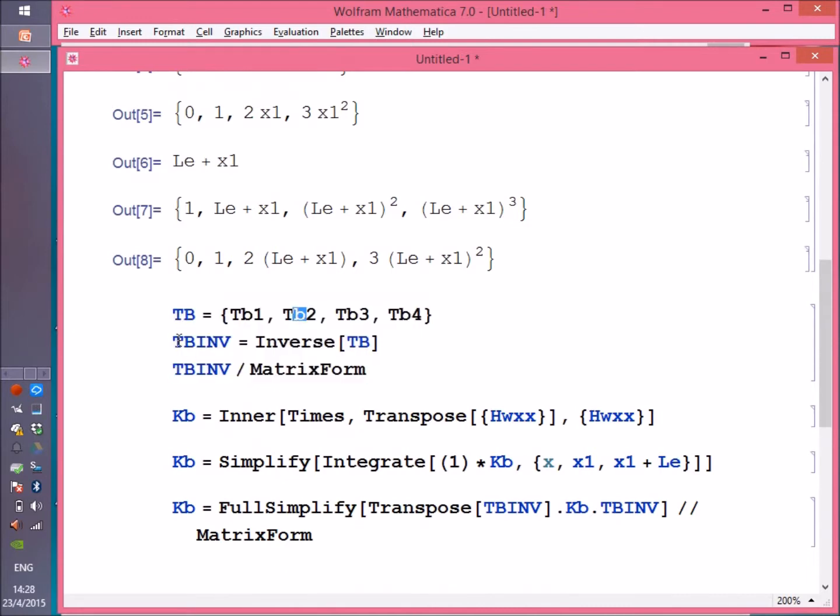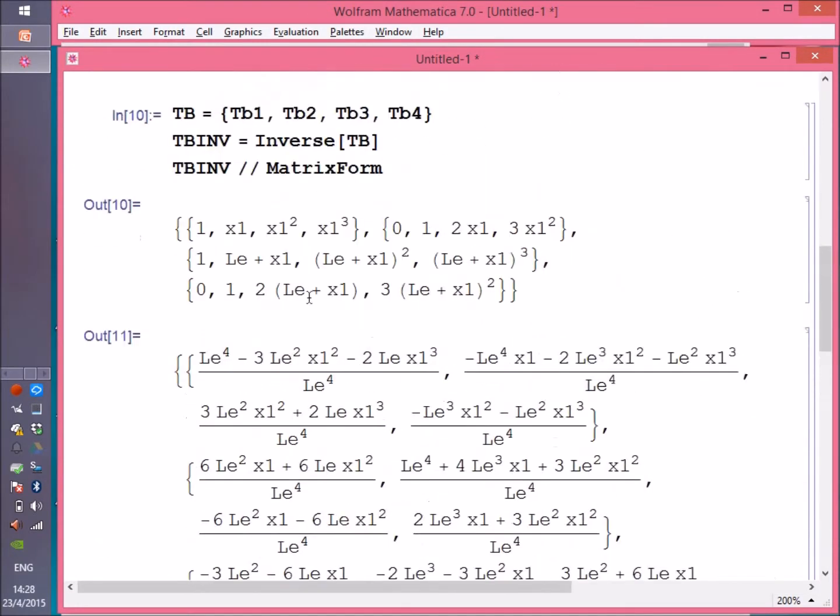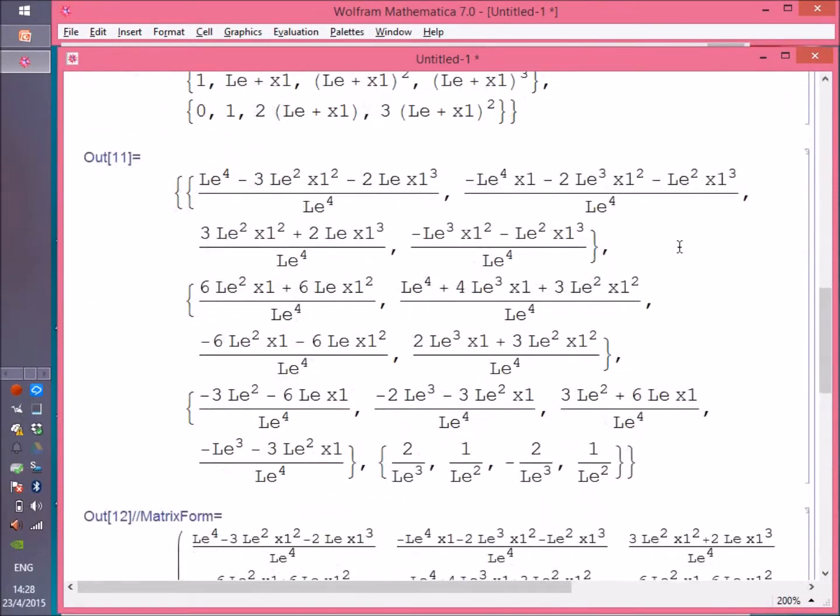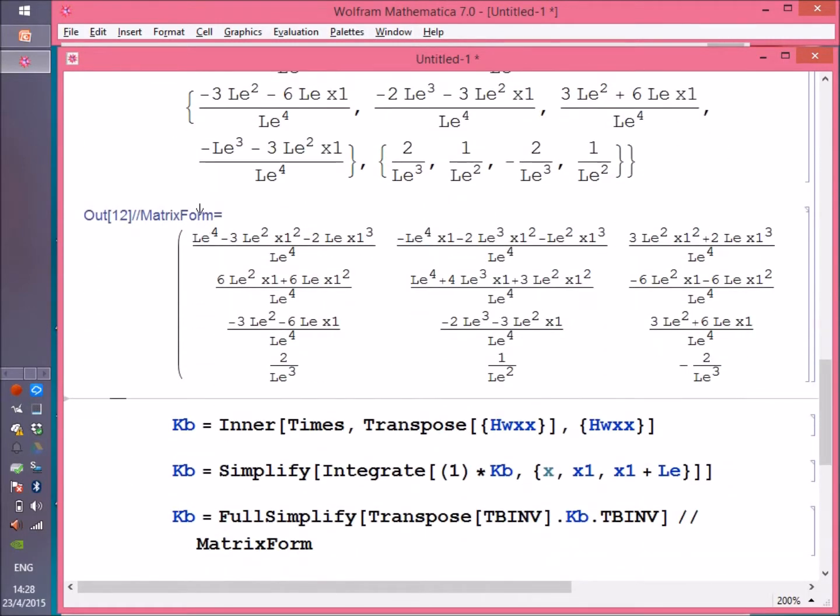Then you invert it, and I'll ask Mathematica to present it in matrix form so you can see it as an inverse matrix. And here we are. Here is the inverse of the T matrix. Mathematica did this all symbolically, and here it is in matrix form.